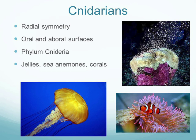Cnidarians have radial symmetry, meaning they can be cut in as many directions as needed and all parts will look identical — similar to cutting a pizza into eight equal slices. A jellyfish can be split into eight equal portions and all will look identical. Cnidarians also have oral and aboral surfaces — only two distinct surfaces.